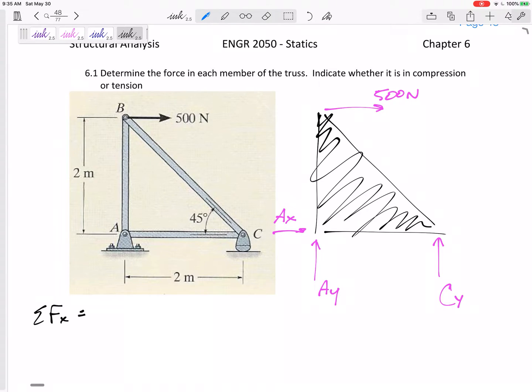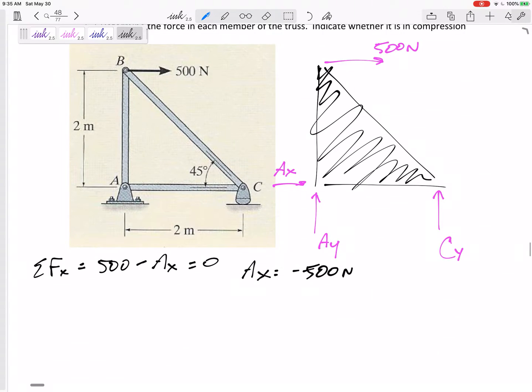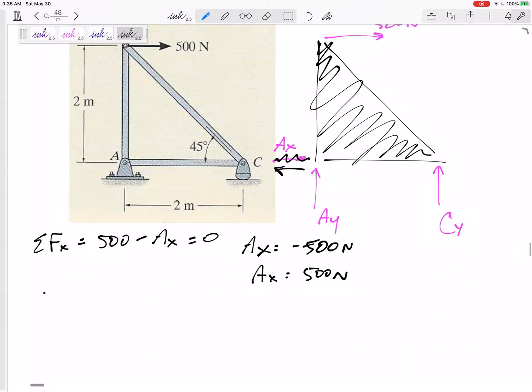So by summing the forces in X, 500 minus Ax, so Ax is negative 500. That negative doesn't mean compression or tension, especially for pins. That negative just means I drew it the wrong way. All right, so Ax is 500 newtons, not that way, to the left.